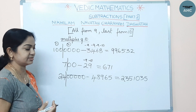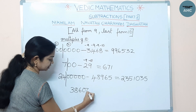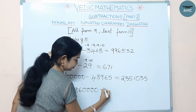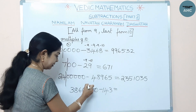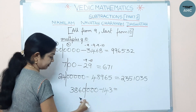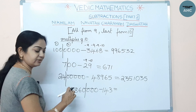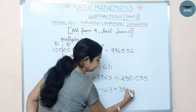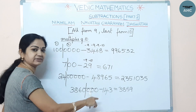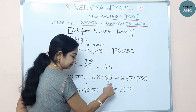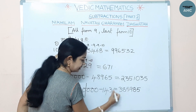Another example: 3,860,000 minus a 3-digit number. Make a partition after three digits from the right. The first part 3860 is reduced by one to give 3859. For the second part, apply Nikhilam: 9-1=8, 9-4=5, 10 minus the last digit gives 7. The answer is 3859 | 857.